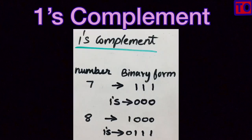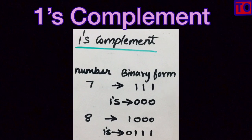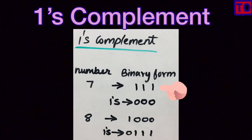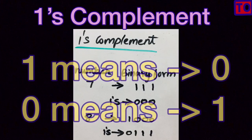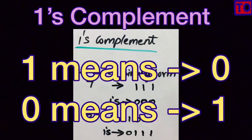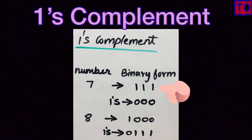How does One's Complement happen? Let's talk about that. The ordinary form of 7 has a binary form. The binary form of 7 is 111. To find the One's Complement, each 1 becomes 0. So the One's Complement of 7 has all bits flipped — 1s become 0s and 0s become 1s.